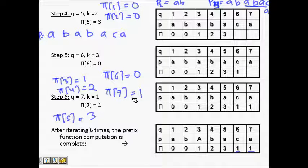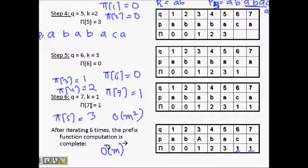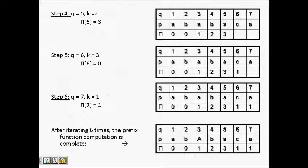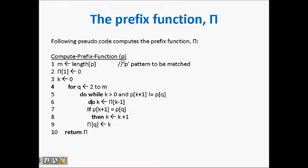We can do something better. What I was doing would somehow become an O(m²) kind of algorithm, but we will try an O(m) — theta of m — kind of algorithm. That's the beauty here. You will see how the KMP algorithm calculates this such that it can be done in lesser time.